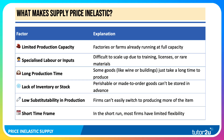So what tends to make supply price inelastic? Here are the key factors. First of all, firms may have limited production capacity. They may already be operating at a very high capacity utilisation rate and don't have much spare capital and labour to put into play.